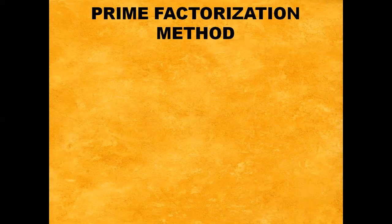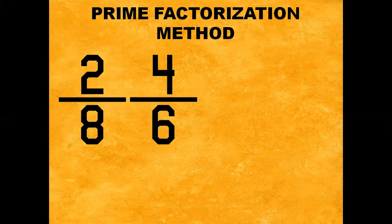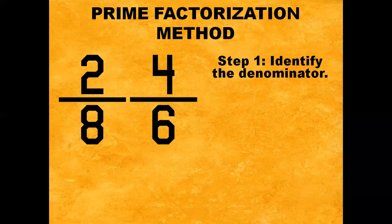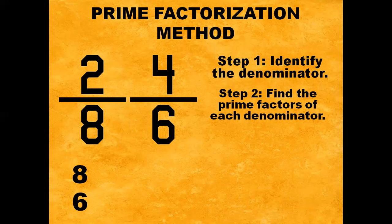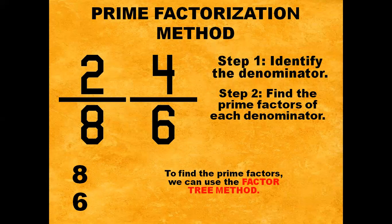Second method, we can use the Prime Factorization Method. For example, we have two-eighths and four-sixths. These are dissimilar fractions because their denominators are not the same. Step number one: identify the denominator. In two-eighths, the denominator is eight. In four-sixths, the denominator is six.